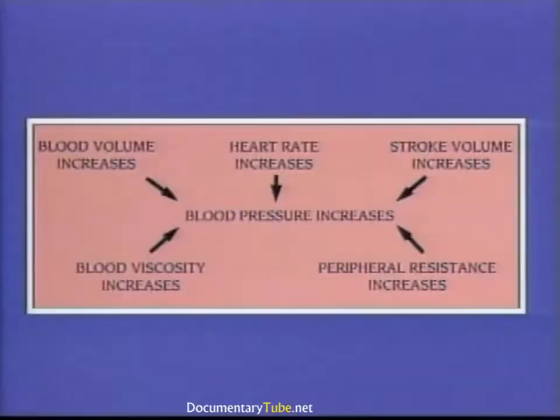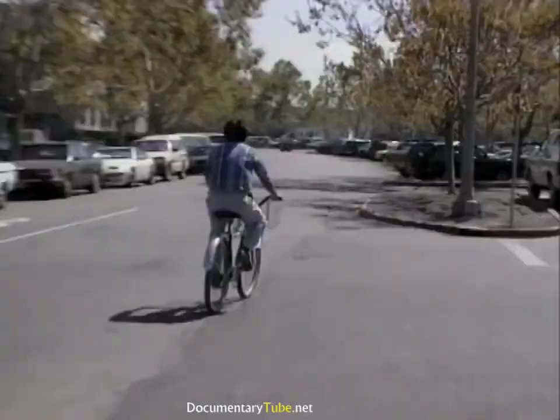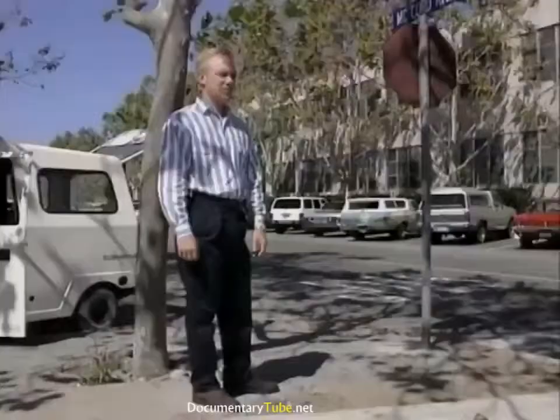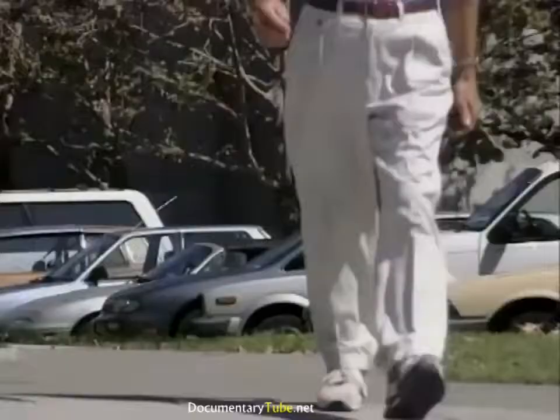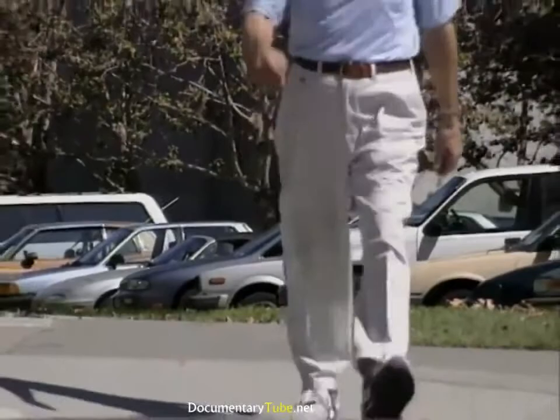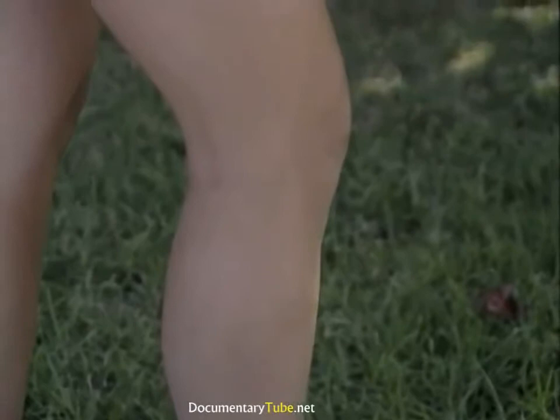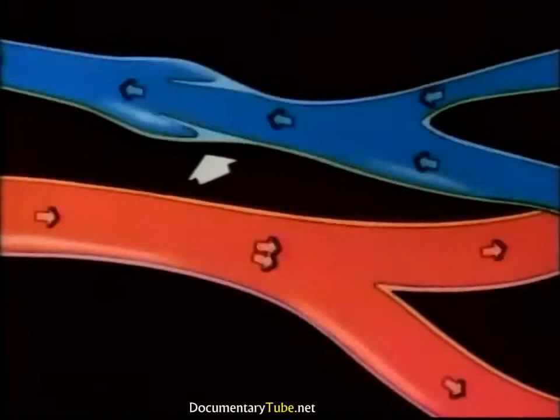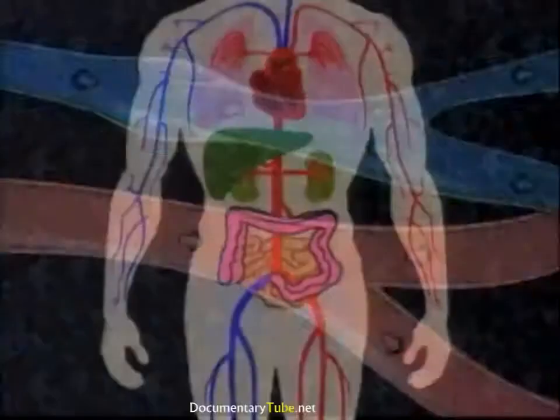Factors influencing arterial blood pressure include the pumping force of the heart, blood volume, resistance to flow, and the viscosity of the blood. Gravity also has a direct influence on blood pressure and flow. When a person is standing, gravity helps pull the blood downward to the lower extremities. When we walk or move our legs, the muscles contract, forcing blood up through the veins of the calf towards the heart. The valves in the veins ensure that the blood flows in one direction, thus counteracting the force of gravity.